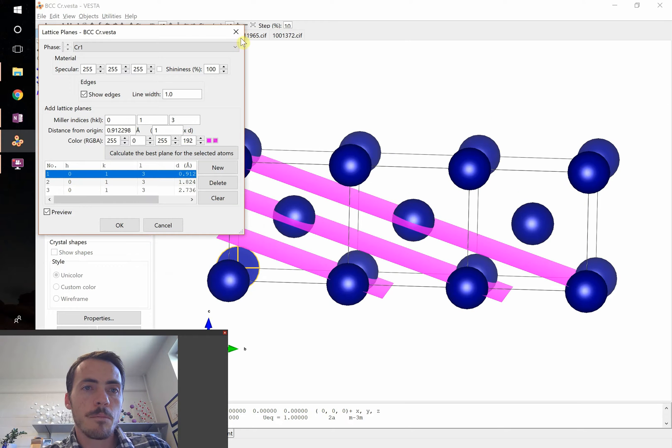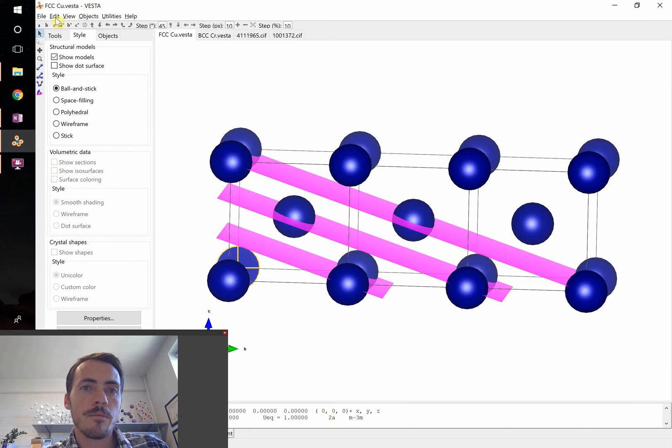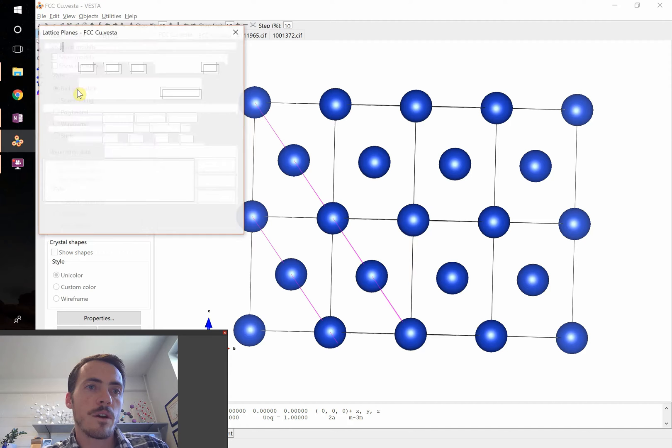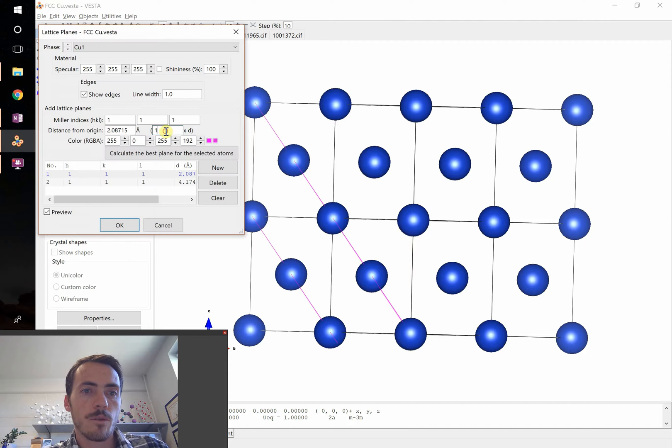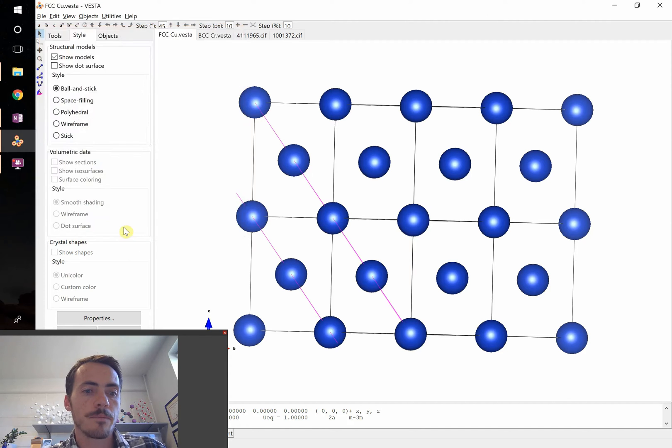Let's double check that one. Pop over here to Vesta, pull up FCC where I've already input the planes and the lattice planes. Sure enough, for 1d spacing, it's 2.087 angstroms. So we're doing good.